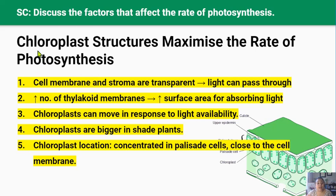There are several structural features of chloroplasts that maximize the rate of photosynthesis. First, the stroma is the fluid containing enzymes and water and is a site for the light-independent reactions — it's clear and transparent, meaning it doesn't block out the light so light can reach the chlorophyll. Second, increased numbers of flattened thylakoids containing chlorophyll increase the surface area for absorbing light. Third, chloroplasts themselves can move within the cell, distributing themselves in response to light availability.